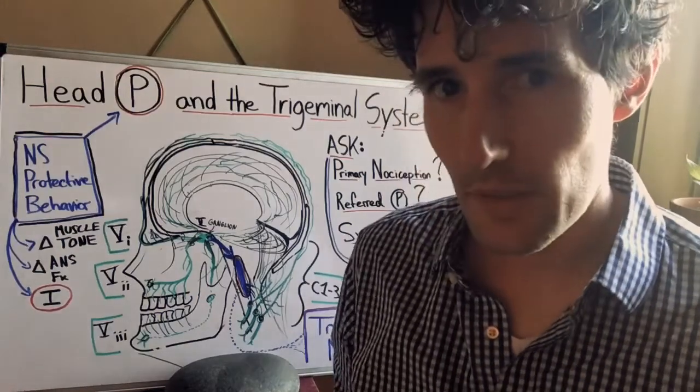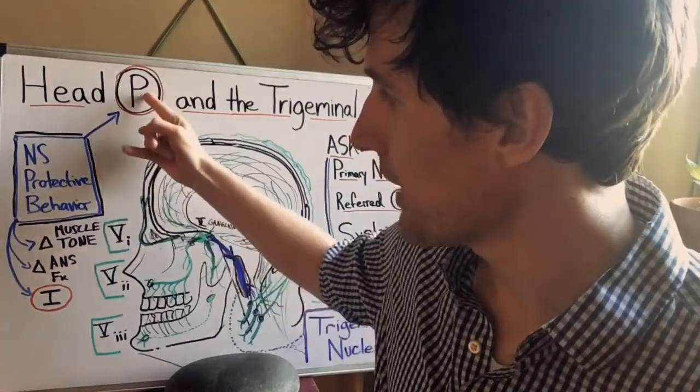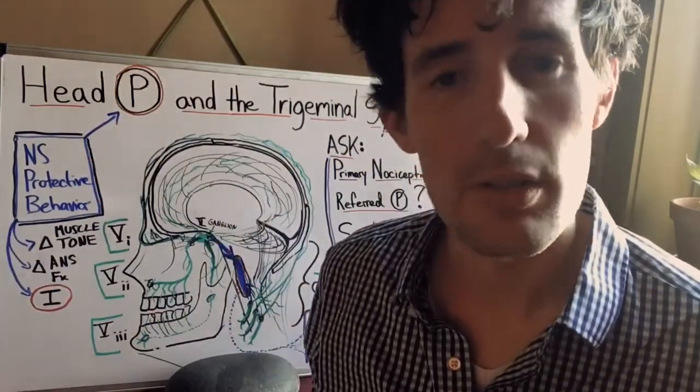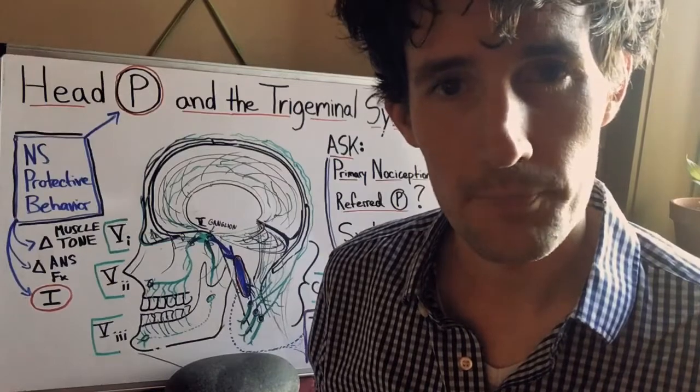Probably the best way to think of it is muscle tone and pain are both outputs of a system, at least one layer of which is perceiving threat, right?